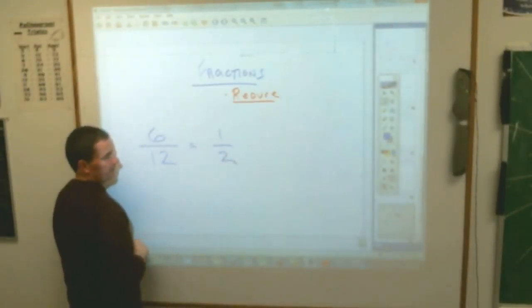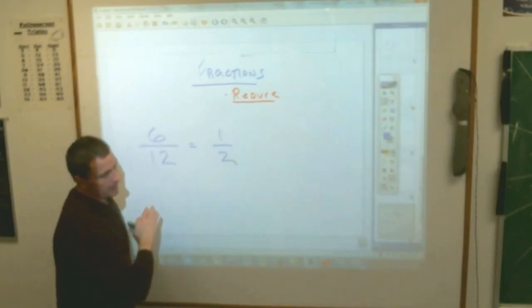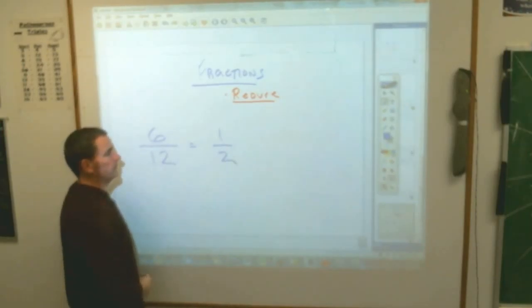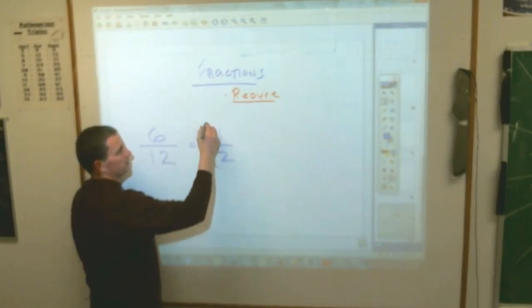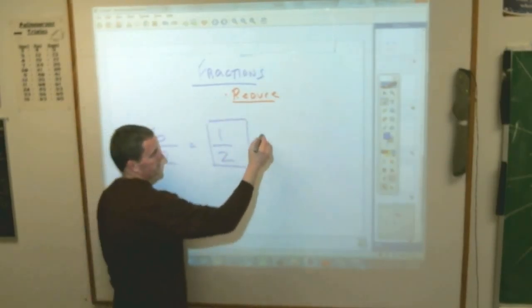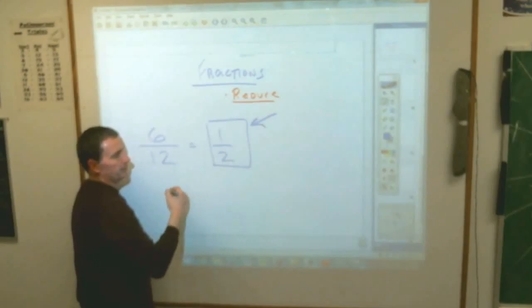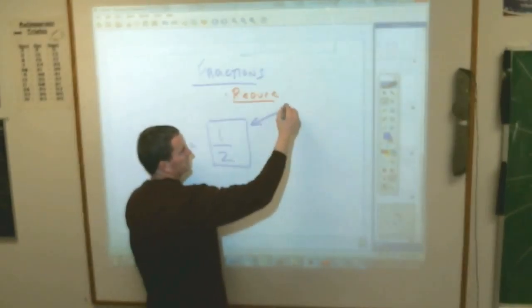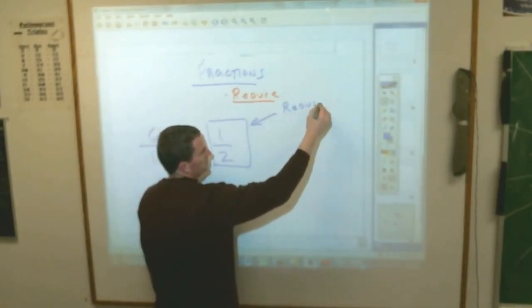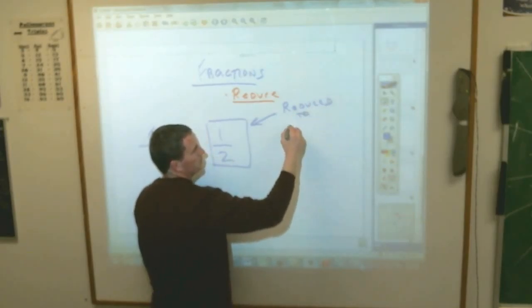And in math, because with any fraction there are an infinite, going on forever, number of fractions that mean the same thing, we always want to go down to the smallest. It doesn't mean different, but it uses the smallest numbers, to the thing that's what we call reduced to lowest terms.